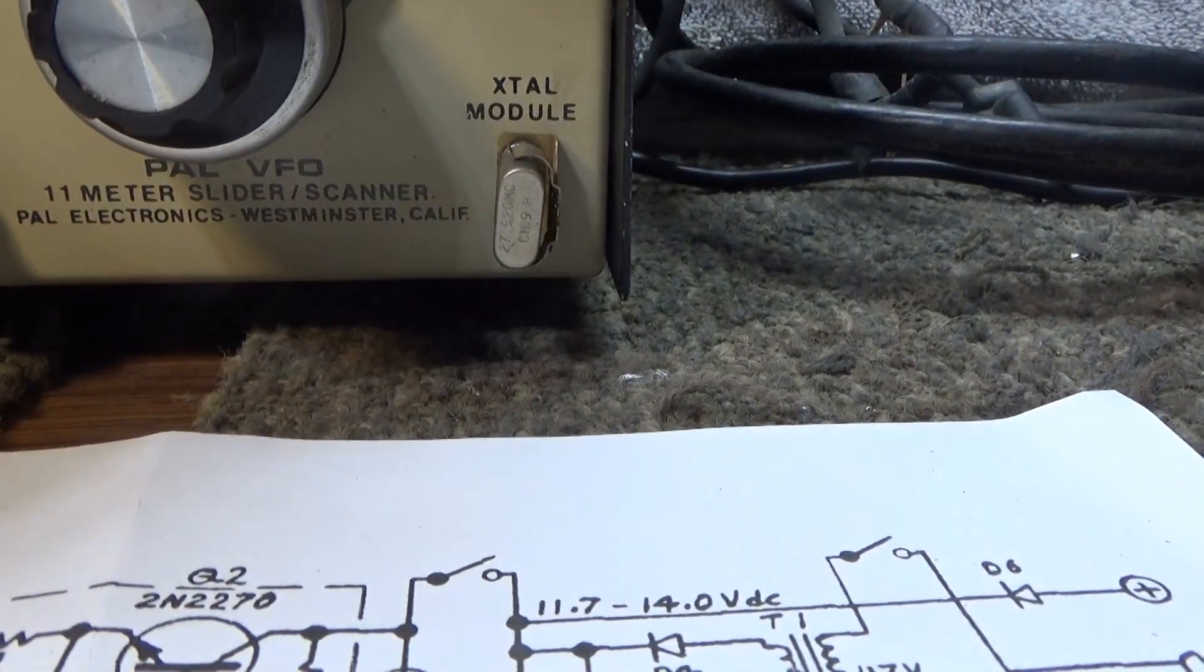Some of the PALs have the crystal on the outside, some have the crystal internal, but either way all PAL VFOs, sometimes they called VCOs, variable crystal oscillator, and this one they call a VFO. Don't know why they changed the name, but anyway the PALs have a crystal and they're crystal controlled and they're very stable.